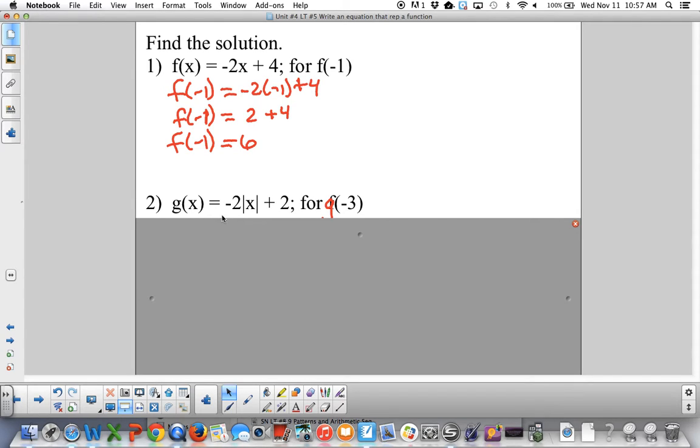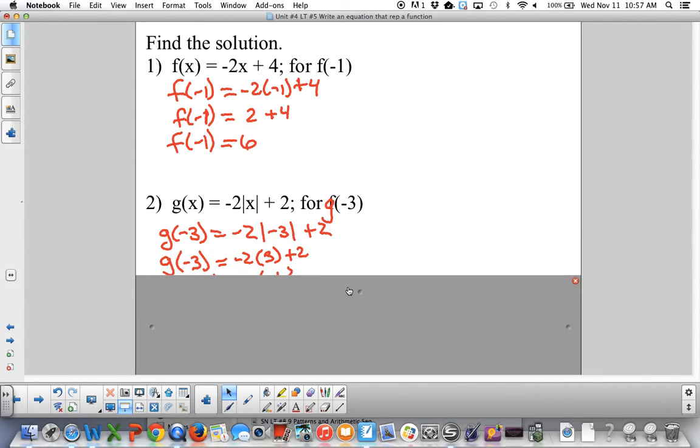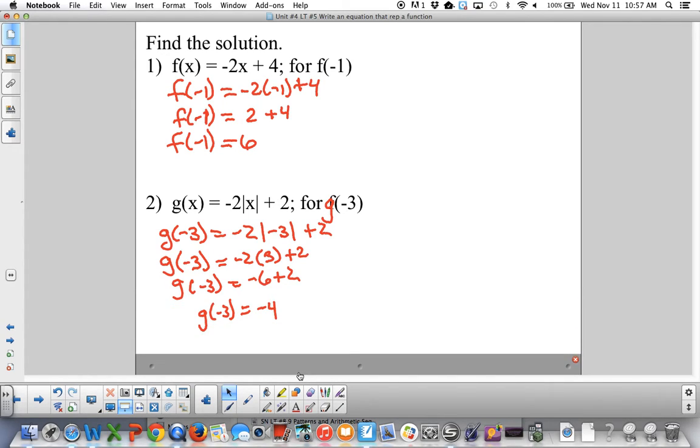Let's try this one. g of x is negative 2 times the absolute value of x plus 2. This is meant to be g. That was my mistake. Instead of f of negative 3, you've got to do g of negative 3. It has to match what you have here. So we plug negative 3 in for our x's. We simplify this absolute value first, which is 3. Times negative 2 is negative 6. And then we add 2. So we get g of negative 3 is negative 4.